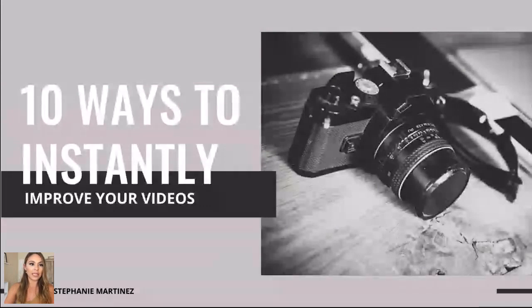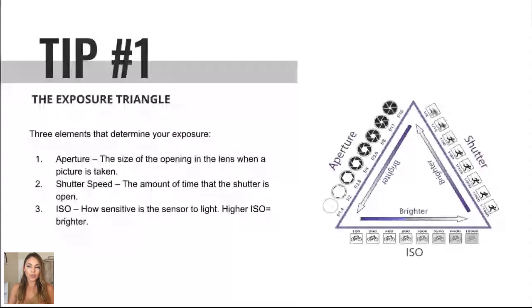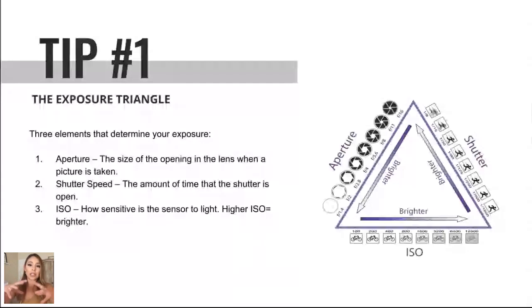Tip number one: the exposure triangle. Exposure is the amount of light in your film or picture. There are three elements that determine your exposure and they all have to do with light: aperture, shutter, and ISO. The aperture is basically the size of the opening of the lens when a picture is taken — the wider the opening, the more light comes in. You can think of it like the iris of your eye.